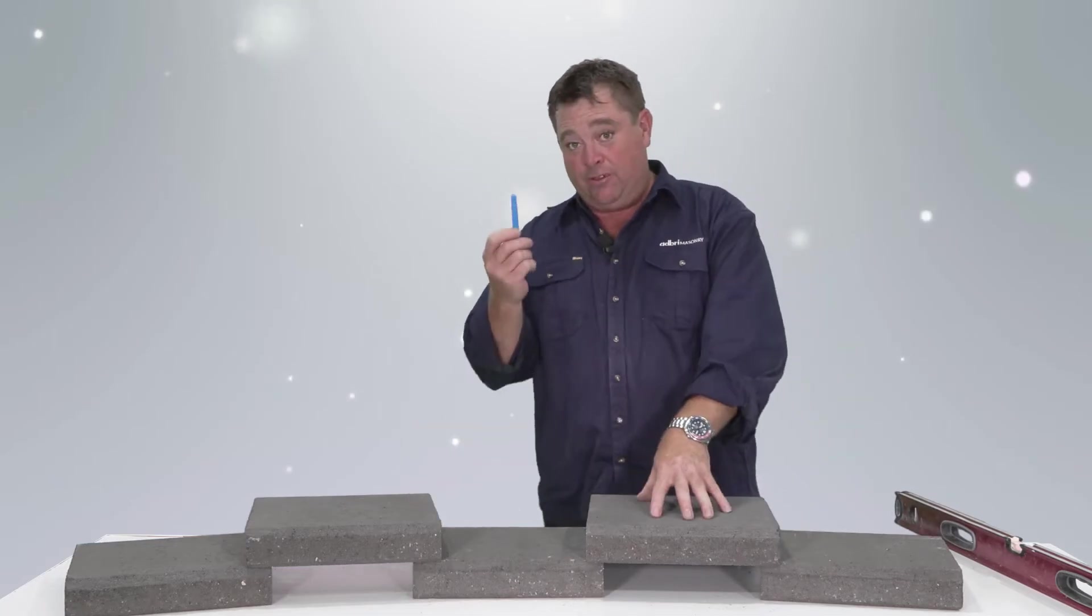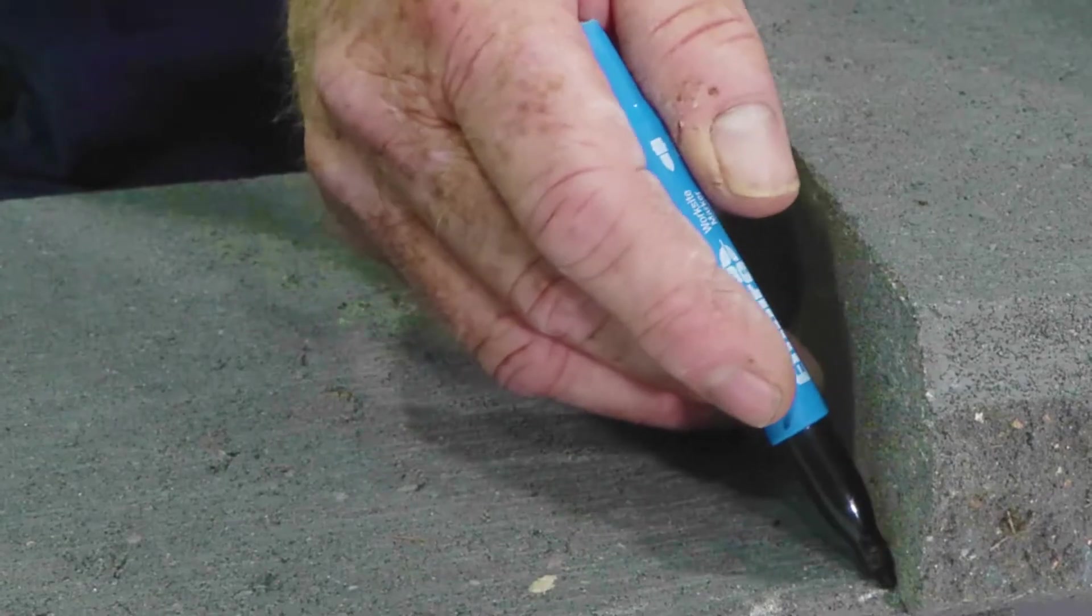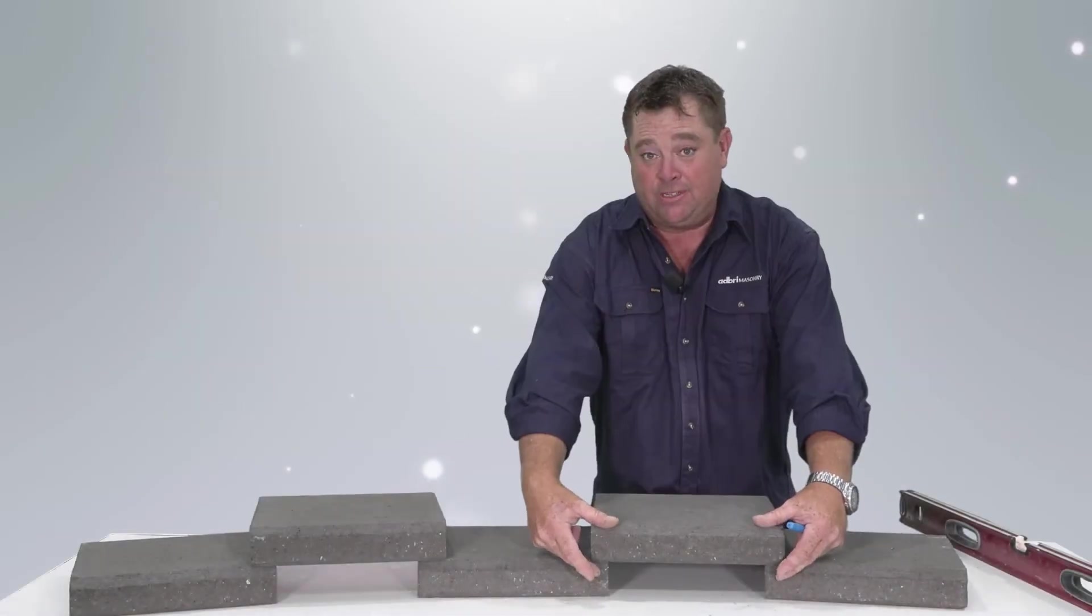Now what you could do is grab a permanent marker and scribe down there, scribe down there, and then cut these two pavers that are in position. This one will naturally fall down and sit flush with them when that void has been taken away.